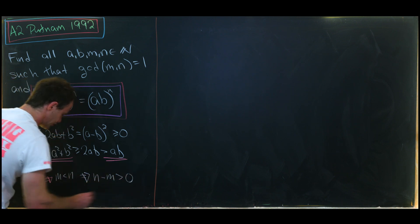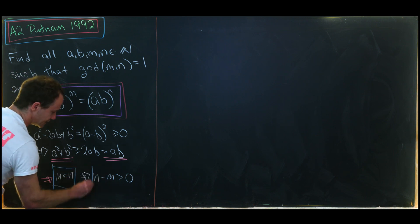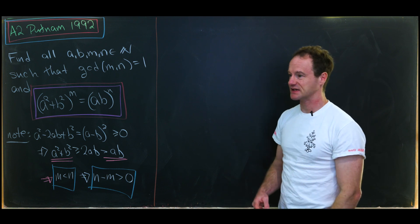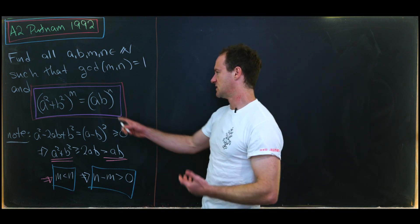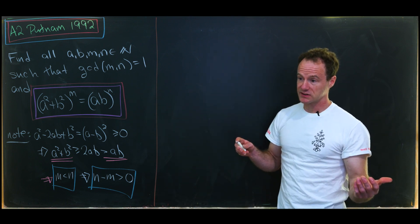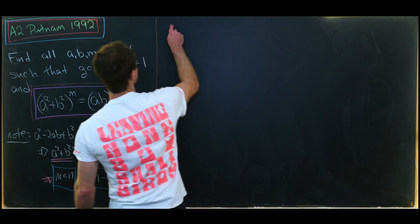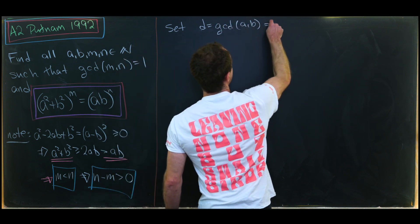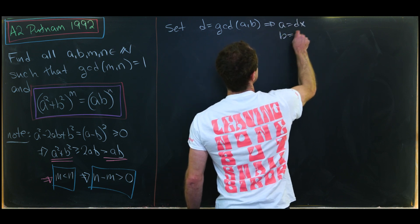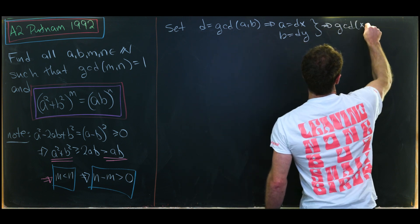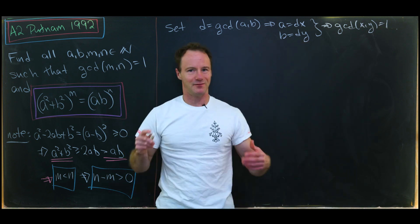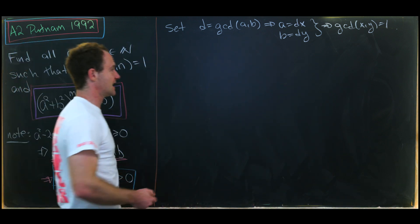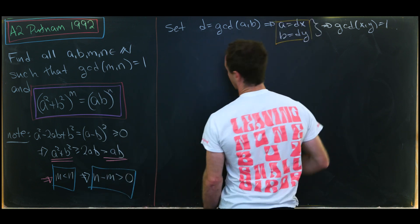In other words, N minus M is strictly bigger than zero, and these inequalities will be important in a later step. A classic start to number theory problems is to rewrite the bases as a product of relatively prime numbers using the GCD. So let's set d equal to the GCD of A and B, which means A = dx and B = dy where the GCD of x and y is 1 — from the defining properties of the GCD.